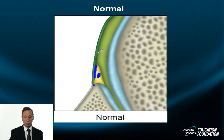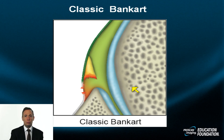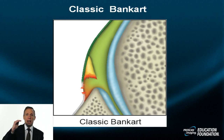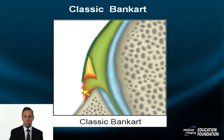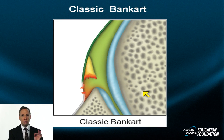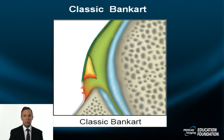The classic Bankart lesion is often associated with a Hill-Sachs abnormality — an impaction injury near the apex of the humeral head. The classic soft Bankart is associated with labro-glenoid separation and fracture of the periosteum, but the bony elements are not involved. Be careful: a flake of cortical bone may not be seen on MRI but only on conventional radiograph.